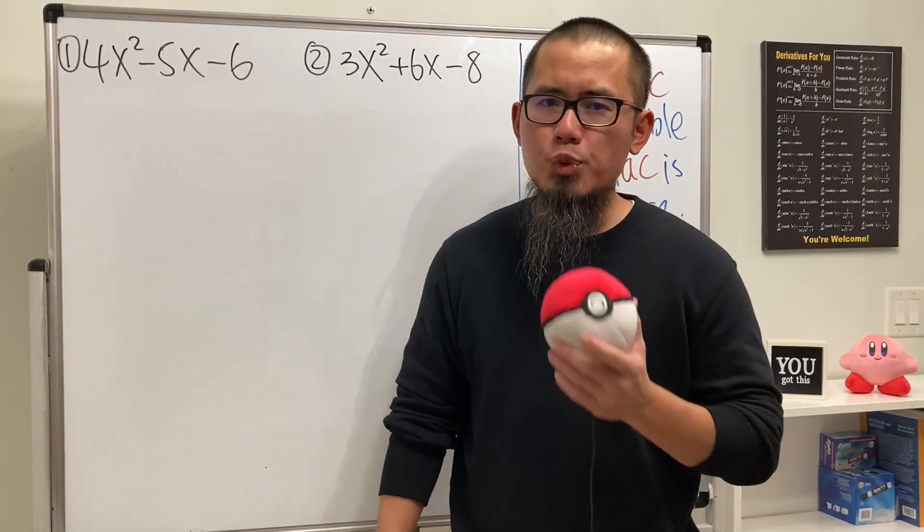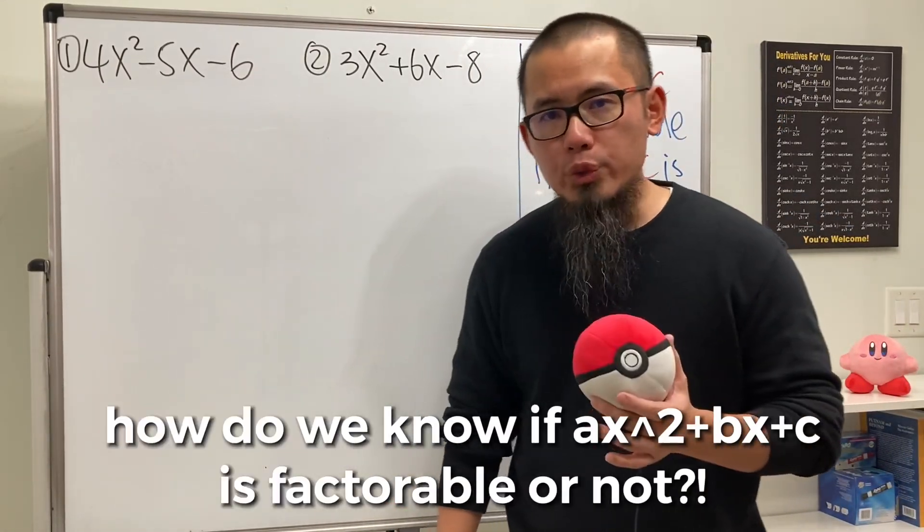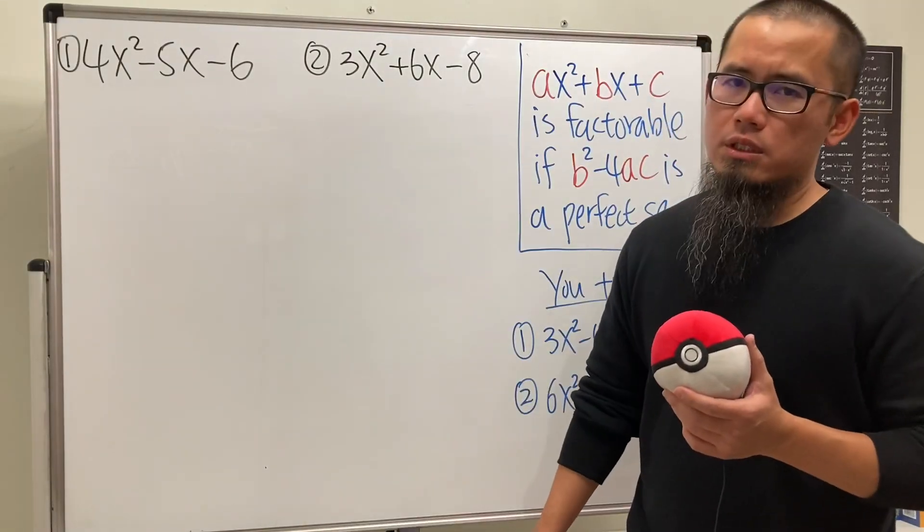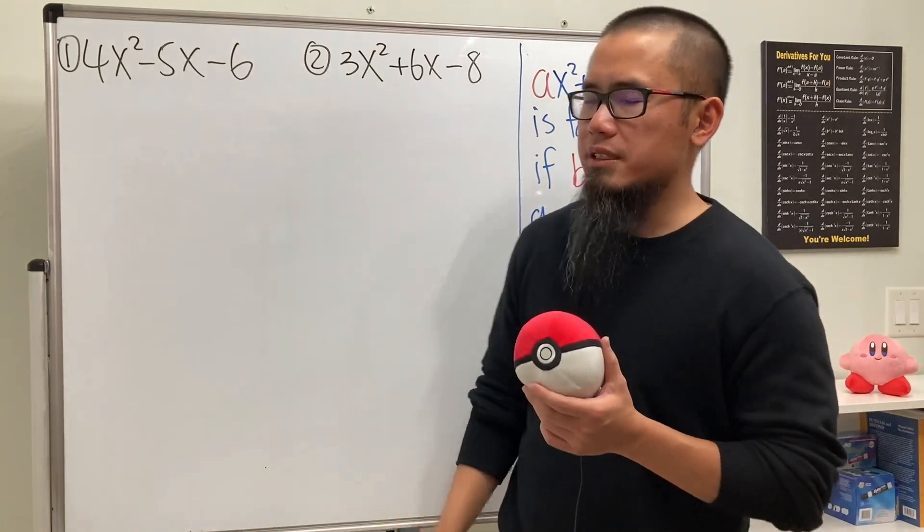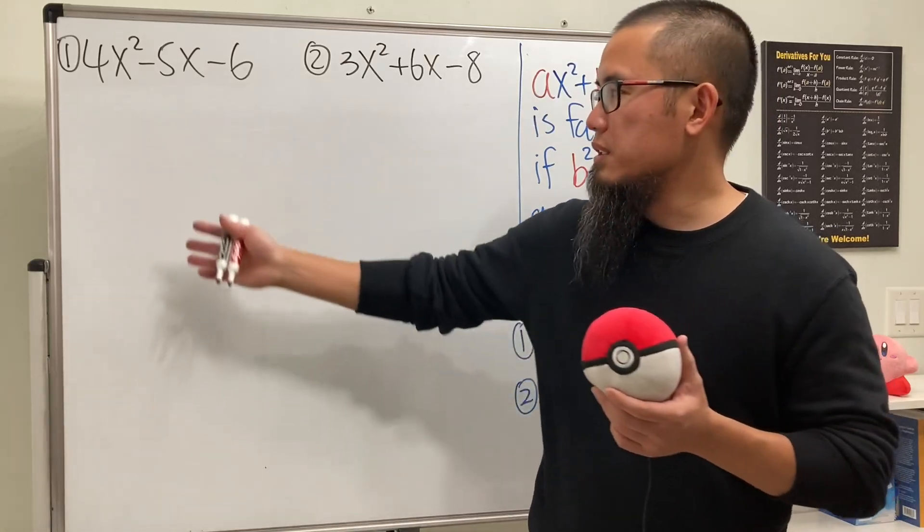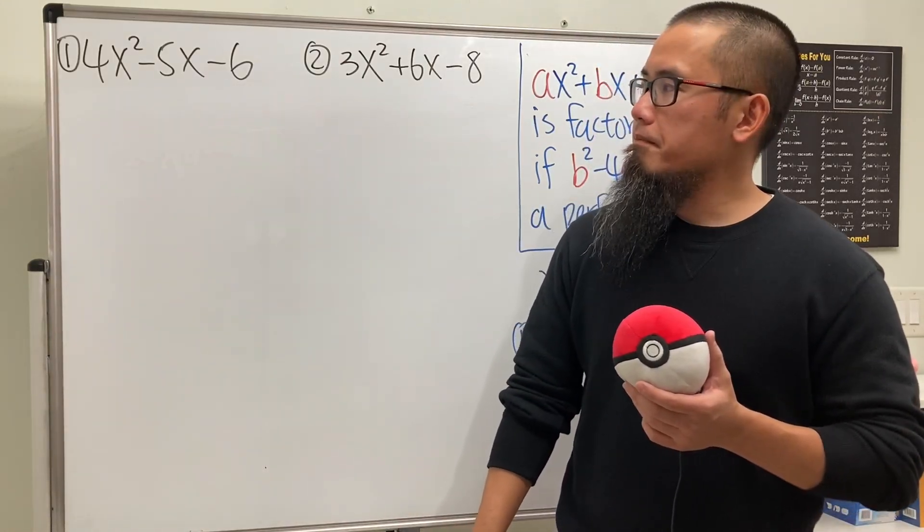This is a very common question from algebra and pre-calculus students: how do we know if a quadratic trinomial is factorable? Of course we can just go ahead and try to factor this, list out all the combinations and test them out. If none of them works then of course this is not factorable, but that's not efficient, right?